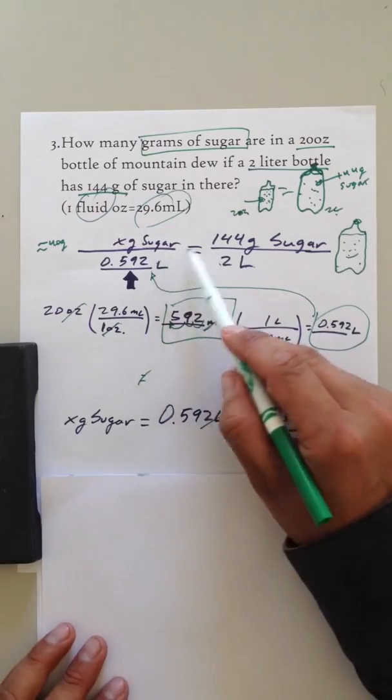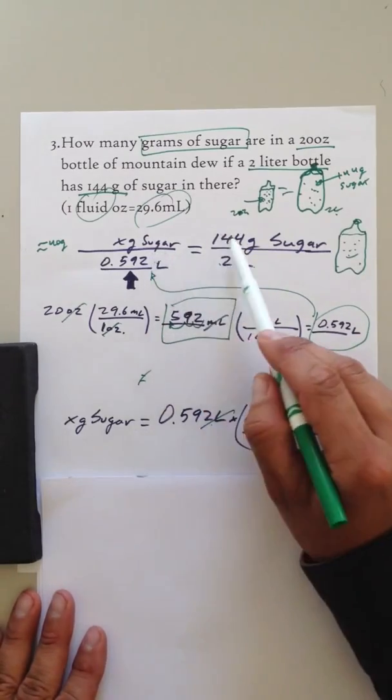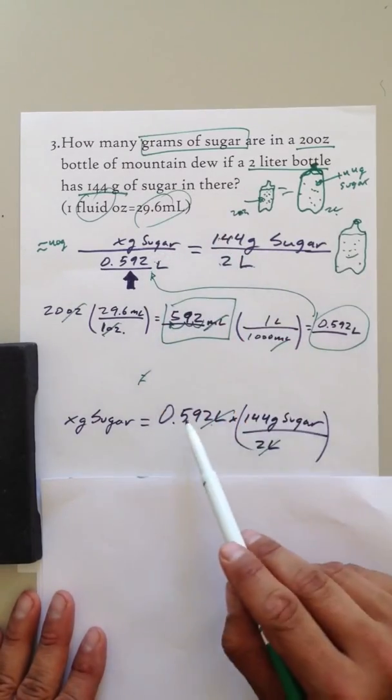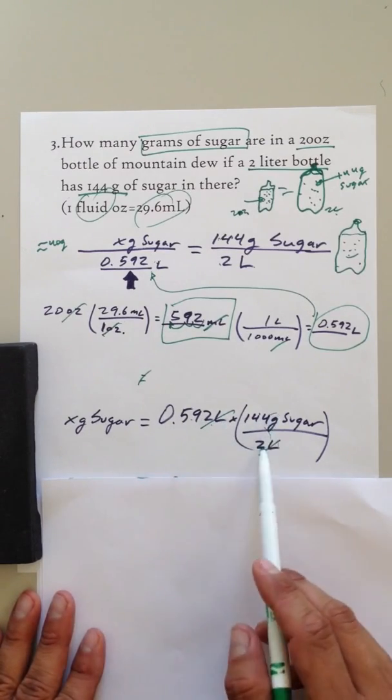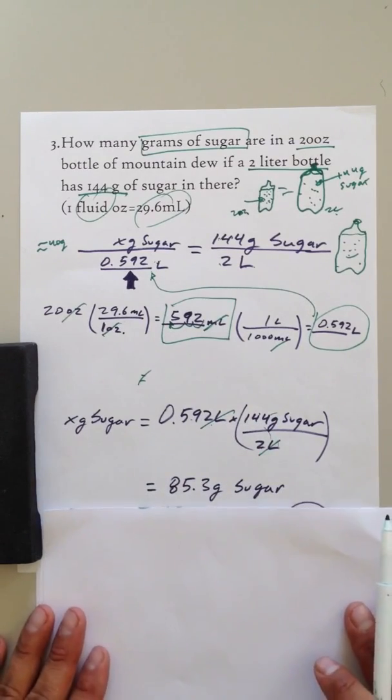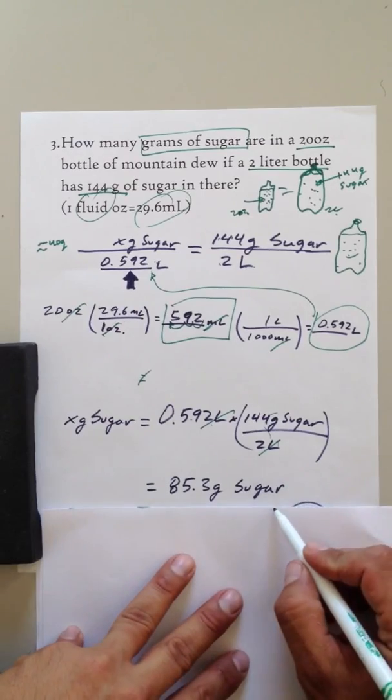Hey, you could think of it like that, or you could just solve it this way. This times this divided by this. So solve for it. This times this divided by this. And you end up with 85.3 grams of sugar.